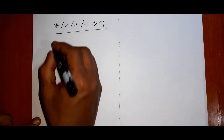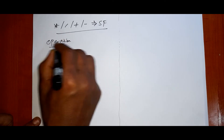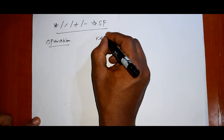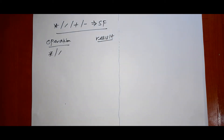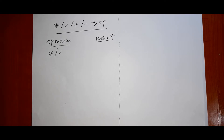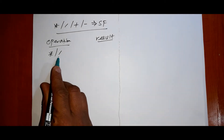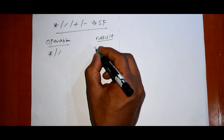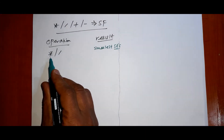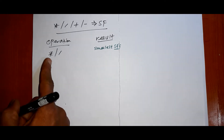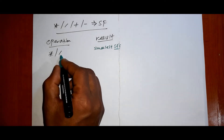Let's see the operation and result. During multiplication or division, the result always has the same number of significant figures as the factor with the fewest or smallest number of significant figures.